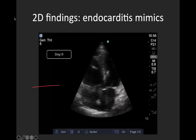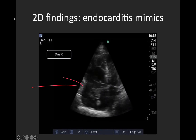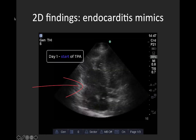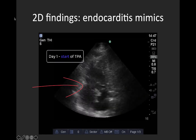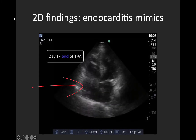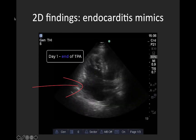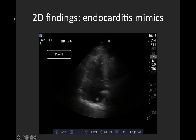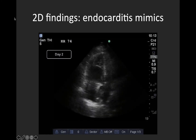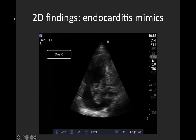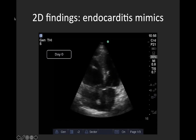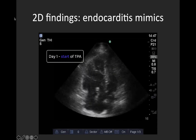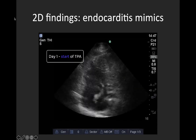This is a video showing an endocarditis mimic — a large right atrial thrombus. Notice that the density doesn't appear to be actually attached to the valve leaflets, in contrast to the previous clip. This is a time-lapse video showing the progression of the thrombus on presentation compared to after administration of tPA, and you can visually see the thrombus shrink, which is pretty cool.